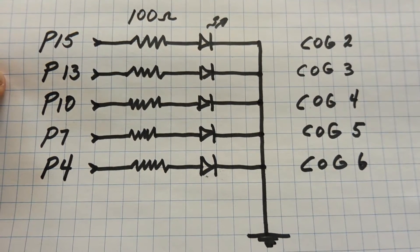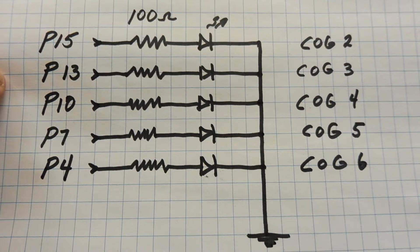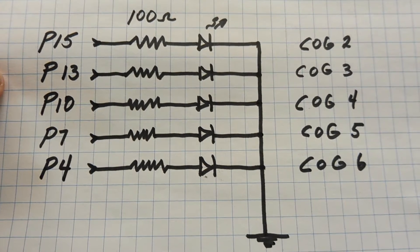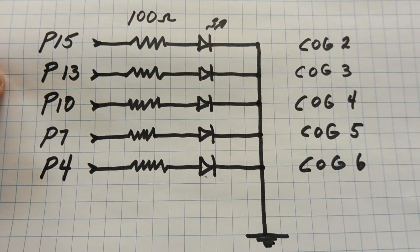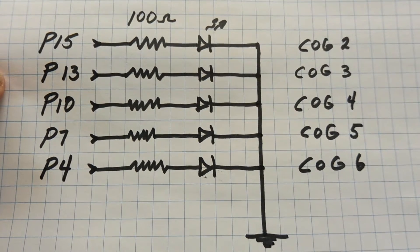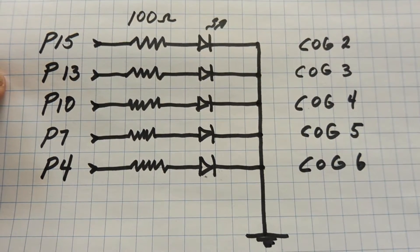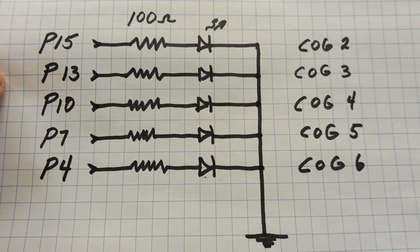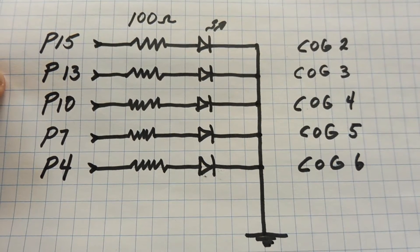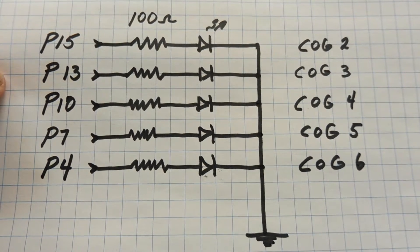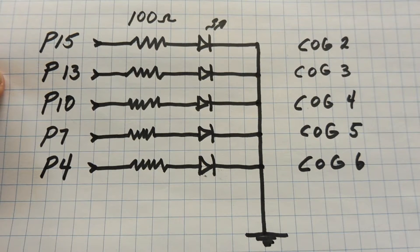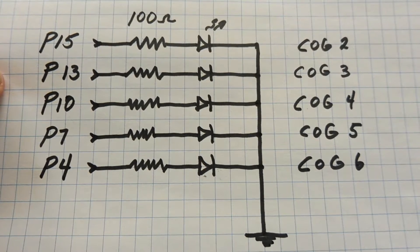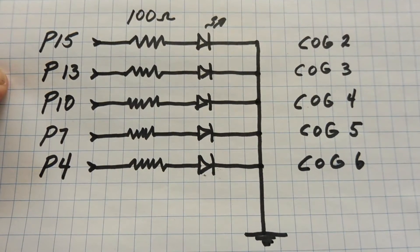Pin 15 is controlling the first LED through COG number 2, pin 13 is controlling the second LED through COG 3, pin 10 to COG 4, pin 7 to COG 5, and pin 4 to COG 6. I'll run a program that blinks each LED at different flashing rates using each independent COG.